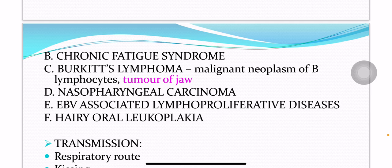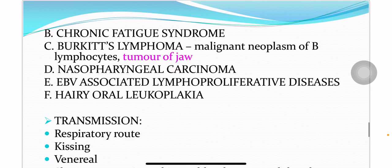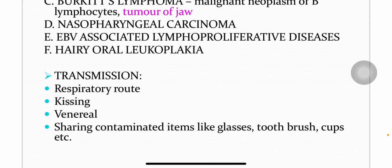Burkitt's lymphoma is a malignant neoplasm of B lymphocytes, also known as tumor of jaw. Transmission of Epstein-Barr virus infection can occur through the respiratory route and by kissing, by venereal transmission, as well as by sharing contaminated items like glasses, toothbrush, cups, etc.